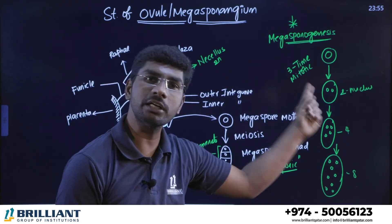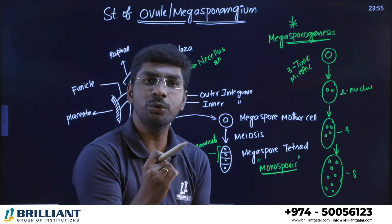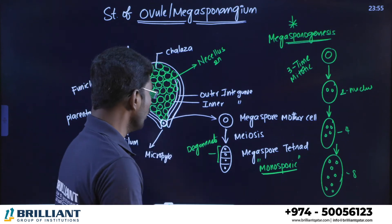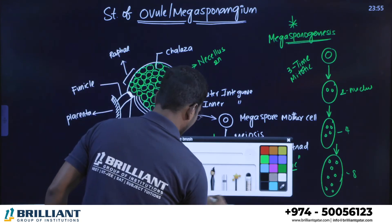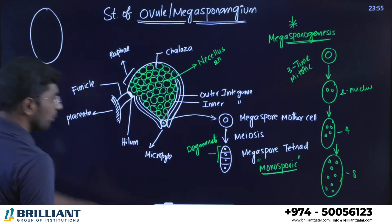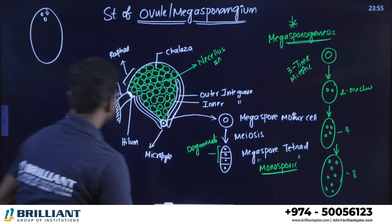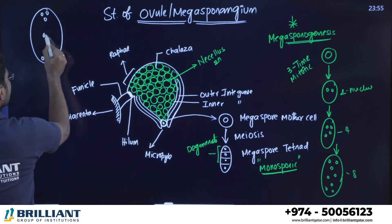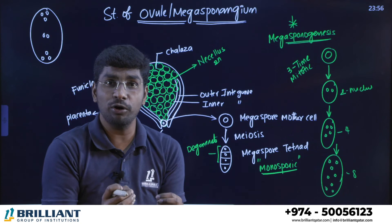After the three sequential mitotic divisions producing eight nuclei, three nuclei move towards one pole and three nuclei move towards the opposite pole, while two nuclei remain in the center. All these nuclei then undergo cytokinesis and become complete cells.